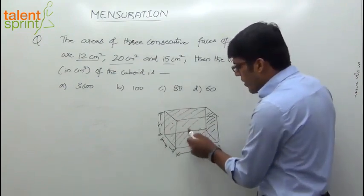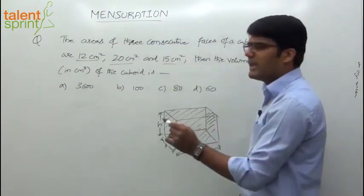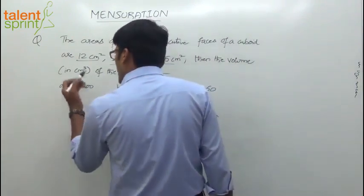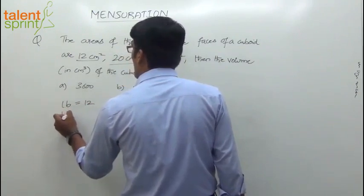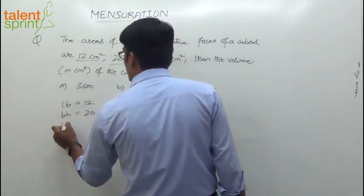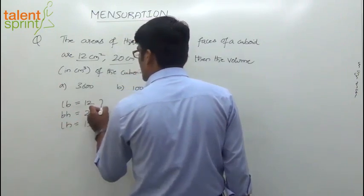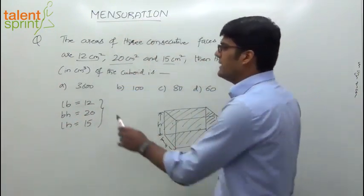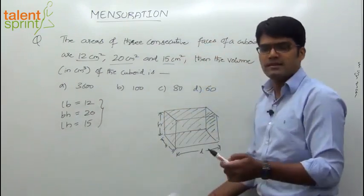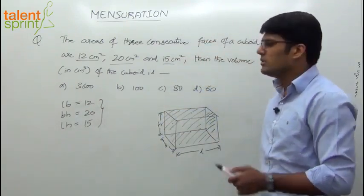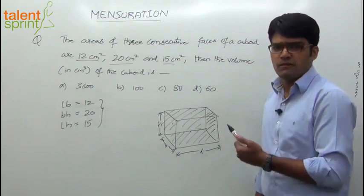Now the point to be noted is all these three faces have been given. So I can say in whatever order: length into breadth equals 12, breadth into height equals 20, and length into height equals 15. These are the three equations given to us. It doesn't really affect our answer. Now three equations, three variables - you can solve.